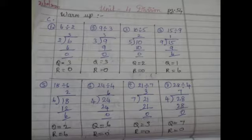One more sum: 9 divided by 3. The divisor we put outside, the dividend we put inside. We say the 3 times table up to 9: 3 ones are 3, 3 twos are 6, 3 threes are 9. So 9 contains 3 three times. 3 threes are 9; 9 minus 9 is 0. The quotient is 3 and the remainder is 0.